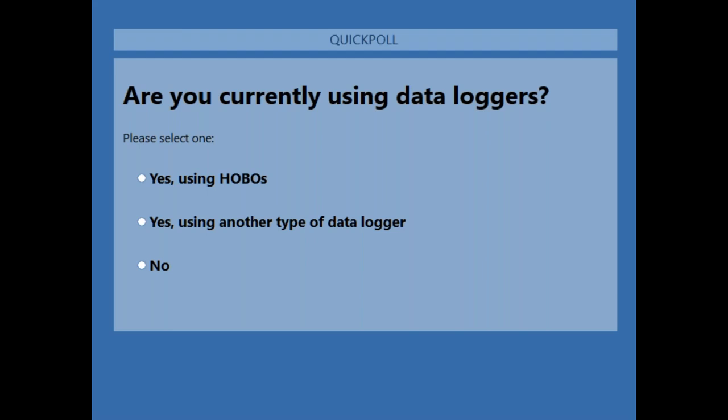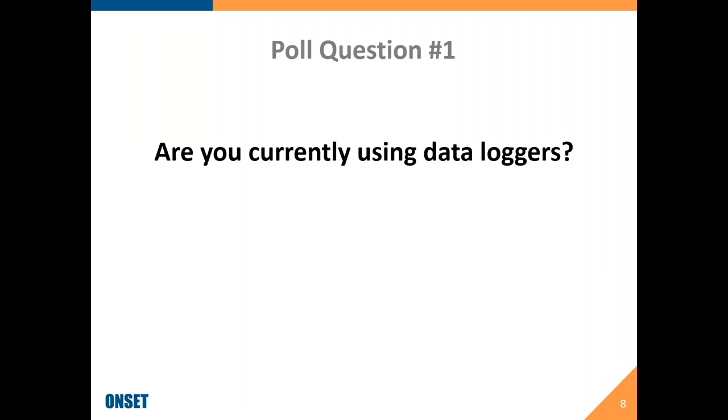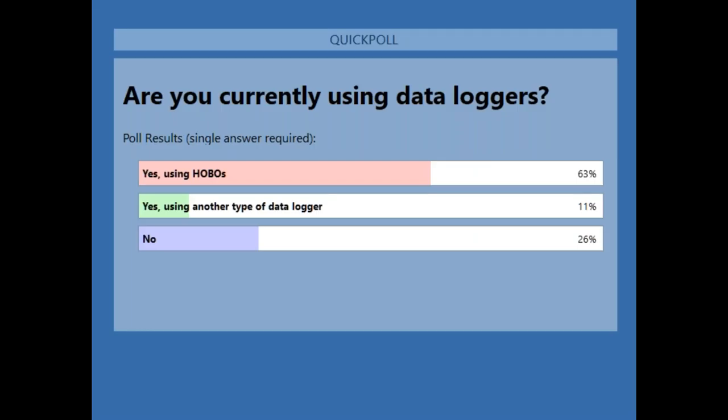It looks like the results are pouring in. We have a lot of people currently using HOBO data loggers, a few using other types of data loggers, and a handful that have not used loggers at all. I'm going to close out the poll and post those results for you all to see. You can see there we've got 63% using HOBOs — that's what we like to see. We hope to make that 100%!